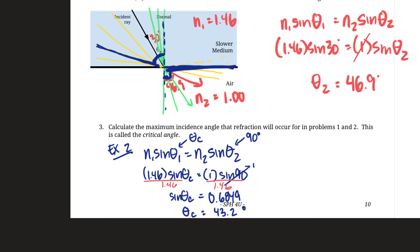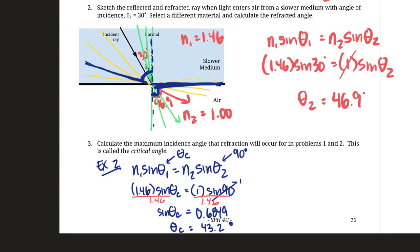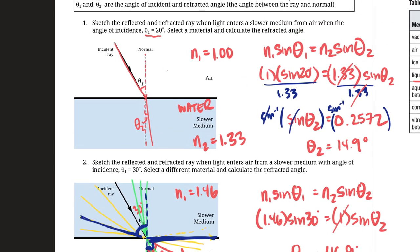If the angle is less than 43.2 degrees, light will be refracted — which is why our original 30 degree example worked fine. If you're interested, try plugging in an angle greater than 43.2 degrees and see what happens mathematically. For homework, try finding the critical angle for problem one, which we skipped — see if you can work it out yourself.